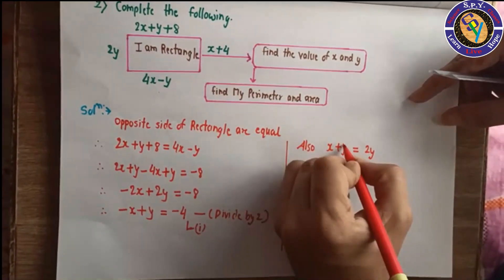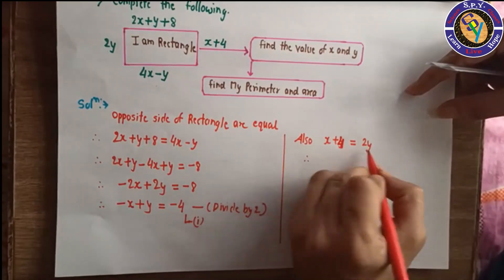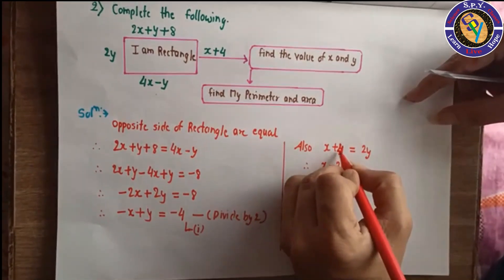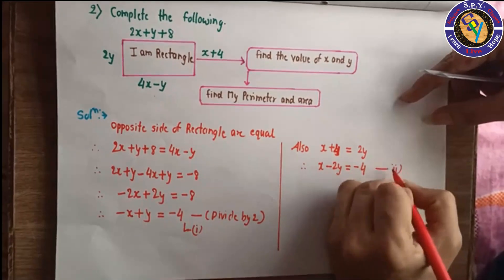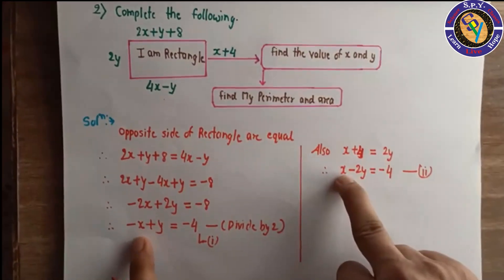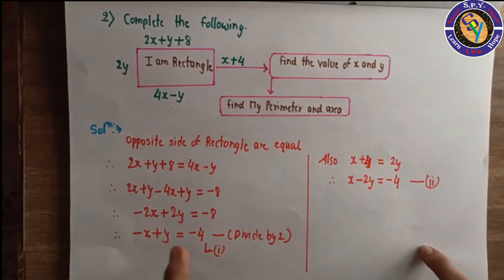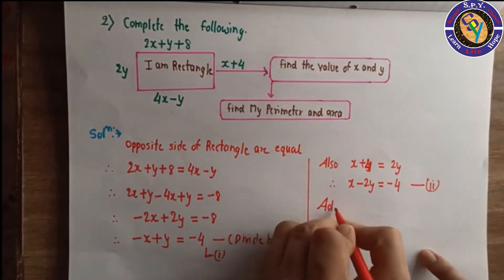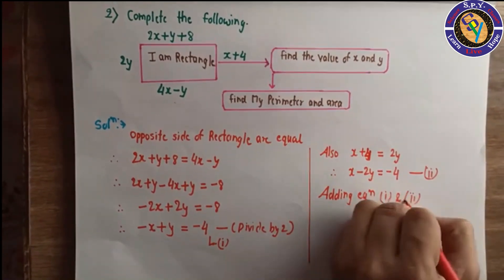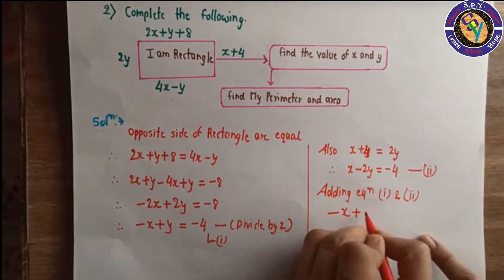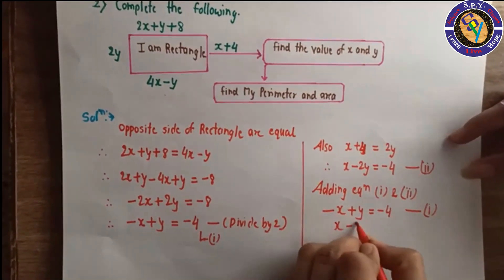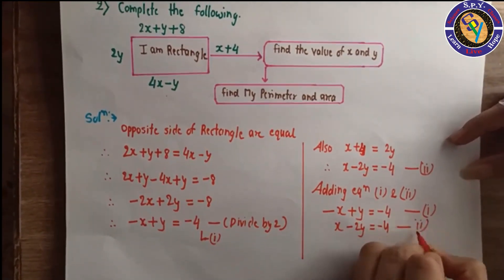From the conditions: equation 1 is x plus y equals minus 4, and equation 2 is x minus 2y equals minus 4.